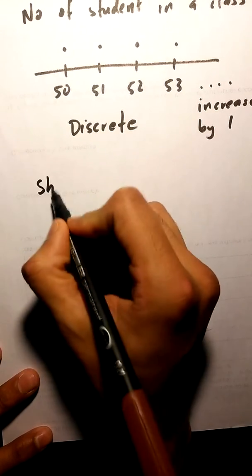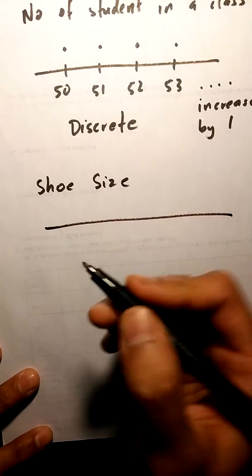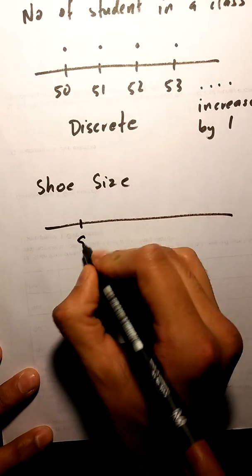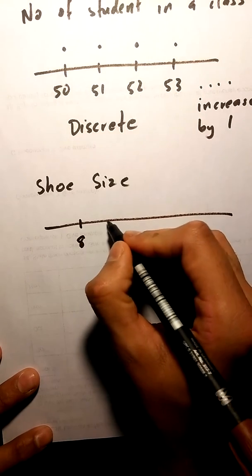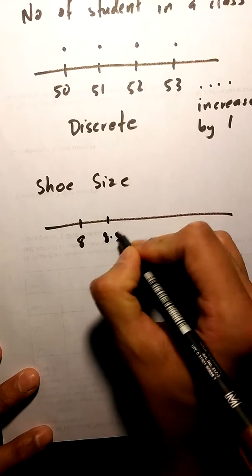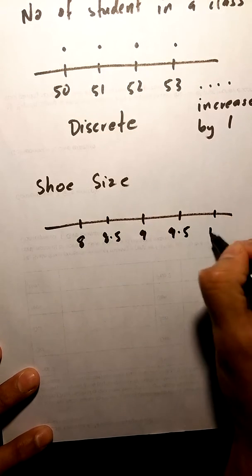If we're talking about shoe size, you start at a random number of 8. How much does shoe size increase by? Well, it's going to go 8.5, 9, 9.5, 10.